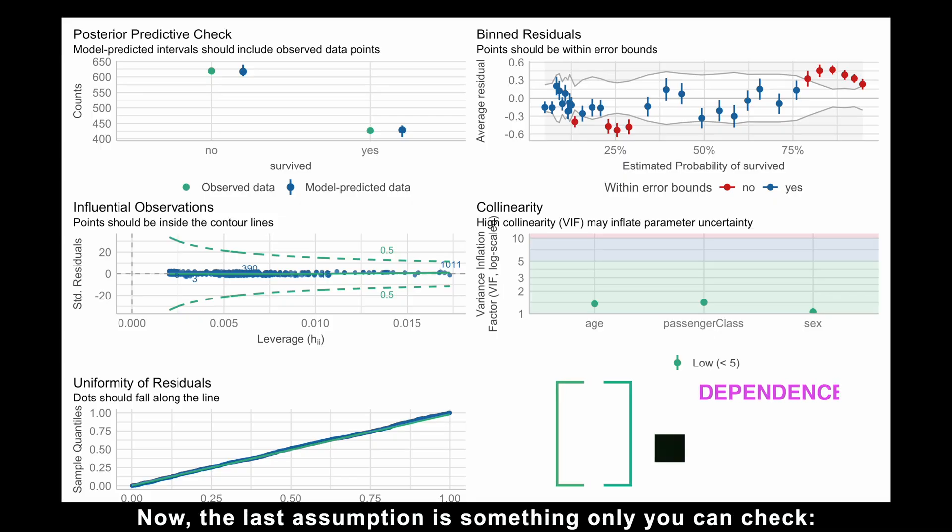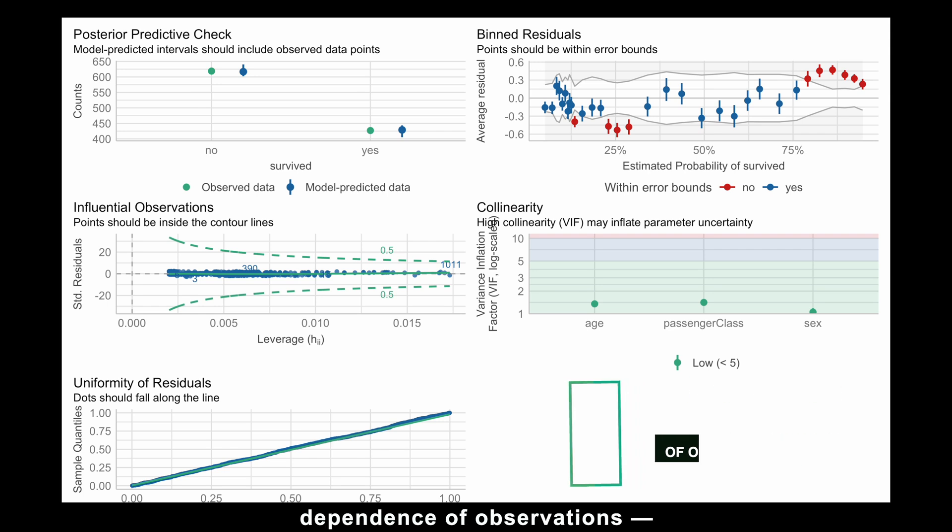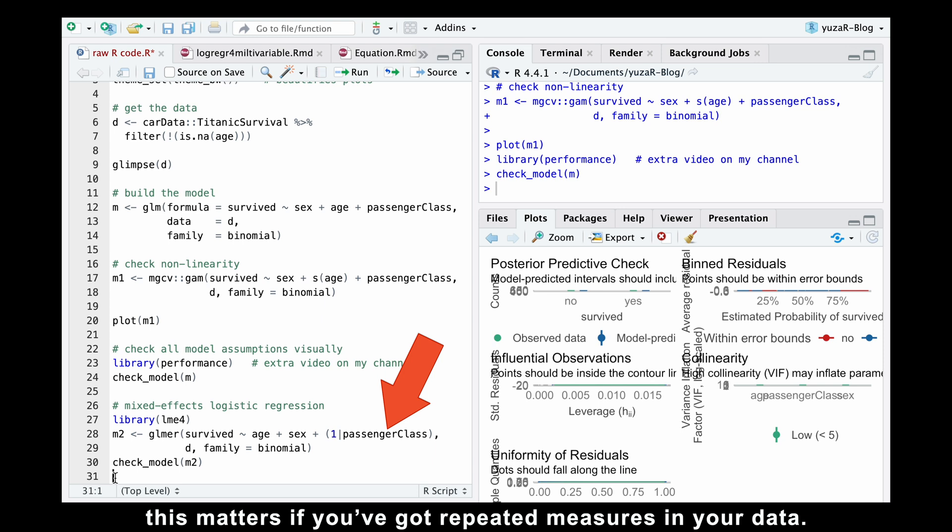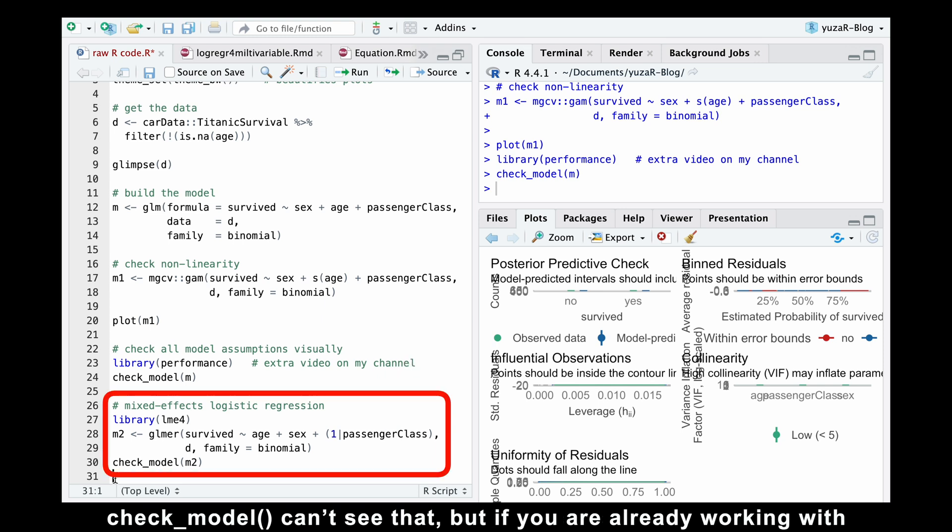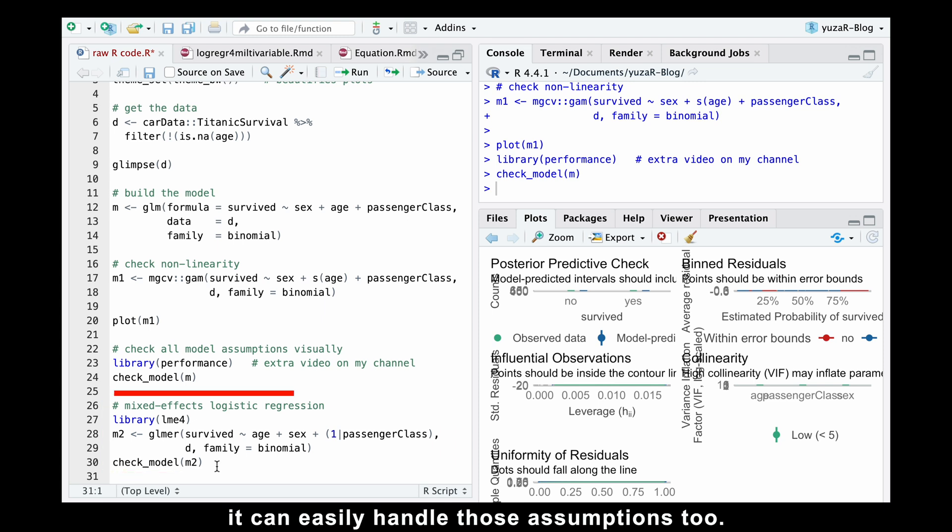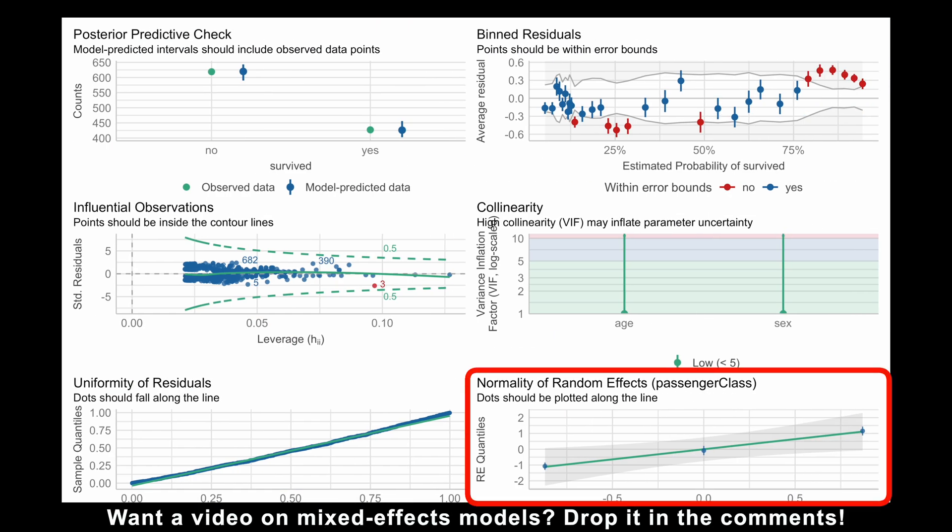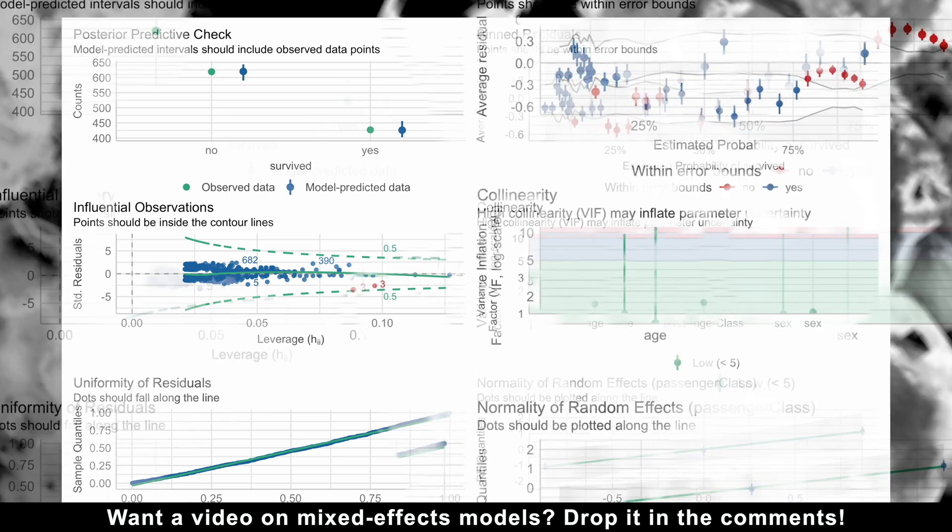Now, the last assumption is something only you can check – dependence of observations. This matters if you've got repeated measures in your data. Check_model can't see that, but if you're already working with mixed effects logistic regression, it can easily handle those assumptions too. Want a video on mixed effect models? Drop it in the comments.